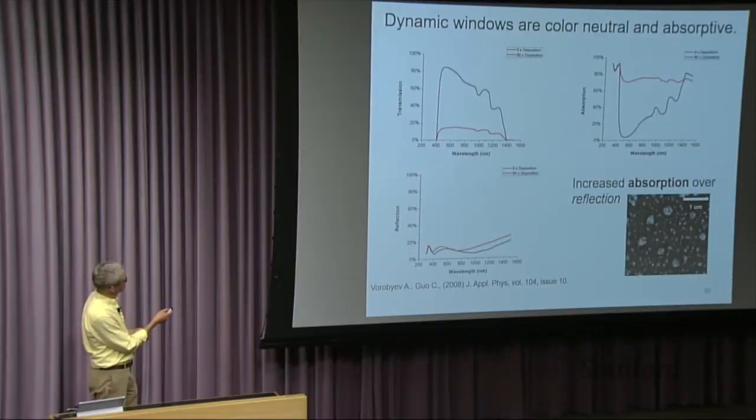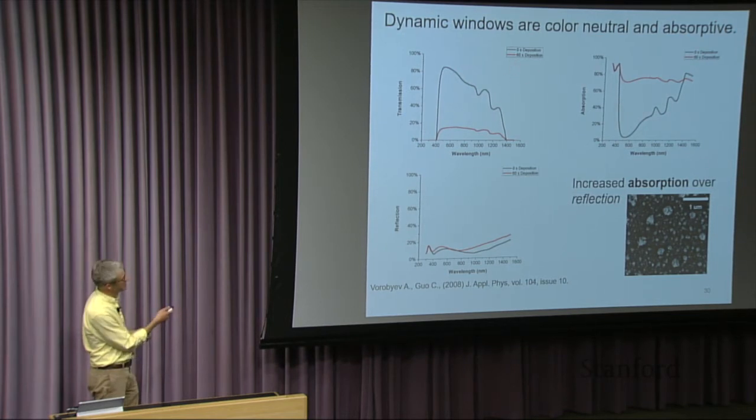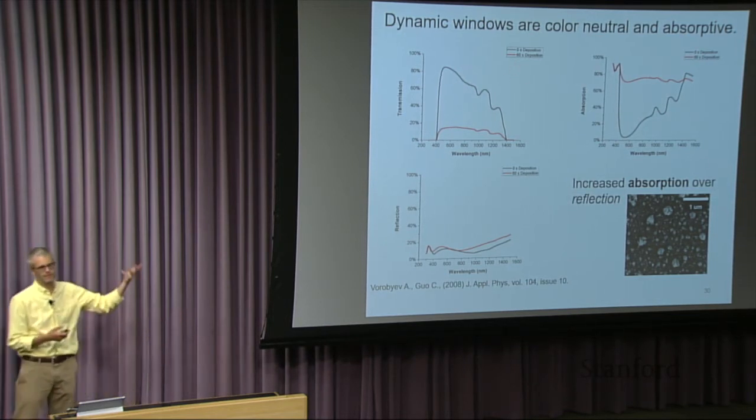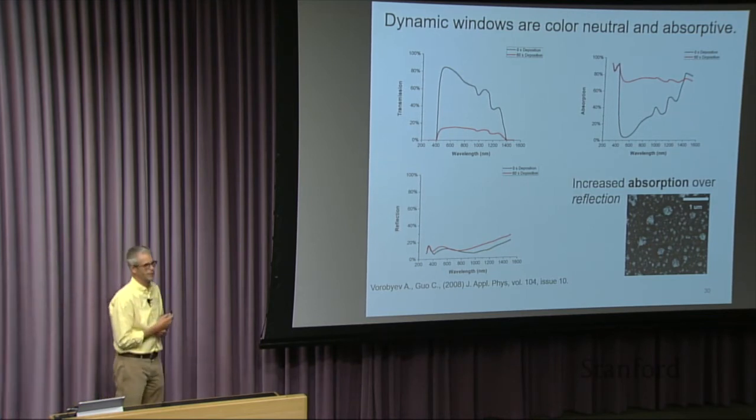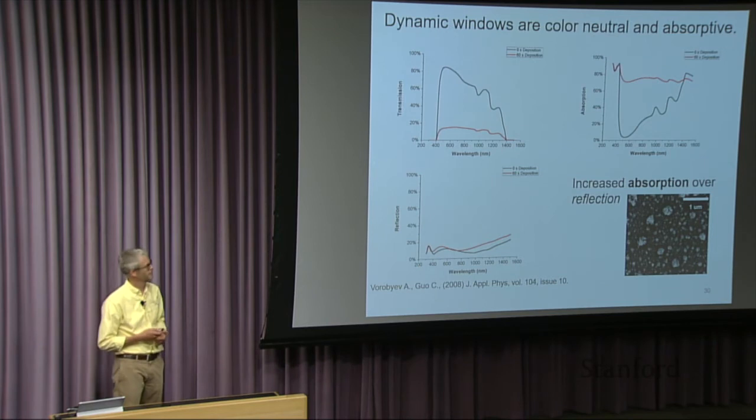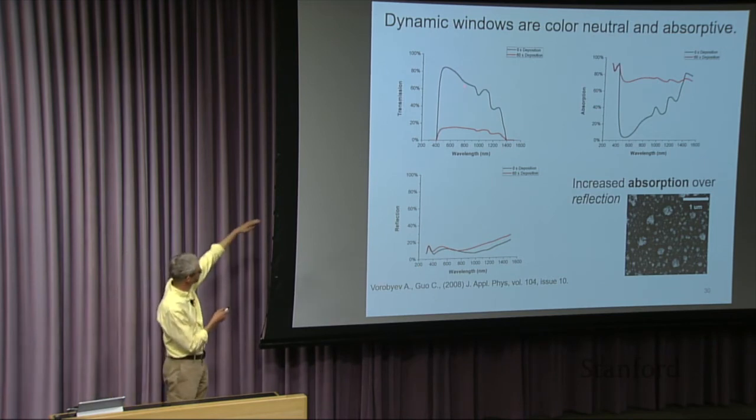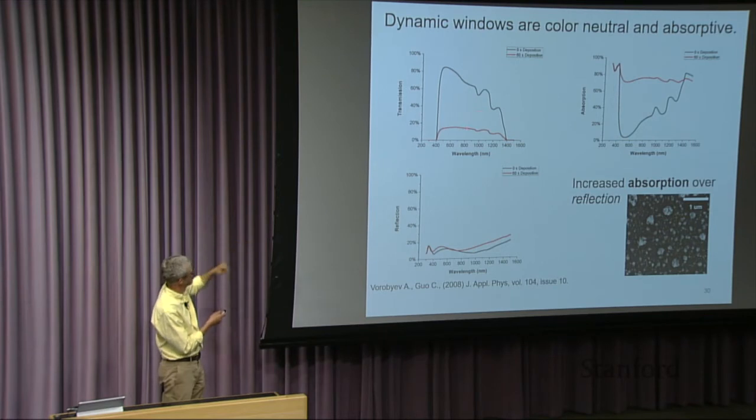So in the clear state, it's fairly clear in the visible. Out in the infrared, the TCO blocks. In fact, the TCO is sort of a bare bones low E coating. And then, you know, of course we can plate for different amounts, but for this one particular plating, we've got a fairly flat 10% transmission.